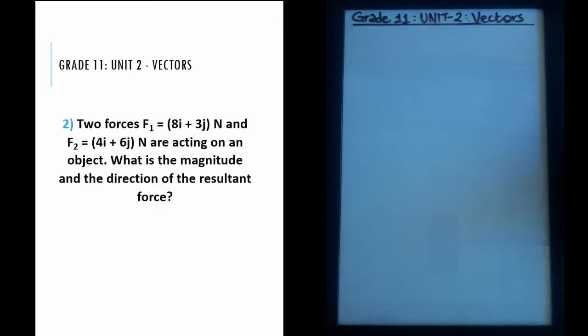Welcome back to JM Lectures. This is on the second unit of grade 11 physics: vectors. We're going to be doing two questions from this unit taken from the national exam. The question says: two forces F1 equals 8i plus 3j Newton and F2 equals 4i plus 6j Newton are acting on an object. What is the magnitude and the direction of the resultant force?